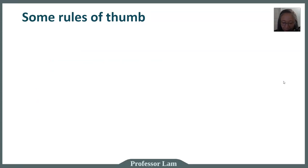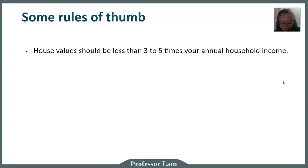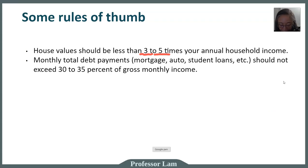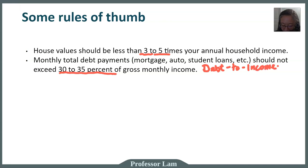Here are some rules of thumb. A common one is that you should not buy a house that costs more than three to five times your annual household income. Another way to assess affordability is the debt-to-income ratio: your total debt payments — including your mortgage, car loan, and every other loan — should not exceed 30 to 35 percent of your income. In mortgage jargon, this is called the DTI ratio, and you'll hear it frequently.